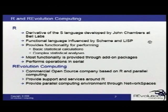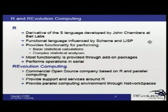One of the things about R that really hurts its performance is the fact that it operates in serial. It doesn't really take advantage of multiple threads or multiple computers if you have access to that. So Revolution Computing, the place where I work, creates a product called Parallel R, and it allows you to run R in parallel on a multi-core system, a cluster, or a grid-type system. We're a commercial open source company, meaning we use the open source version of R and sell support and services on top of that, as well as this parallel computing environment called Network Spaces.